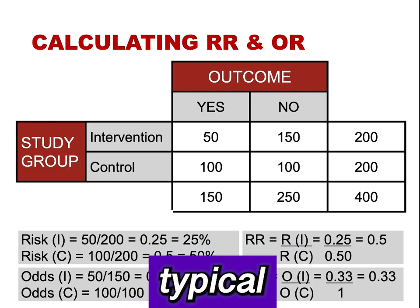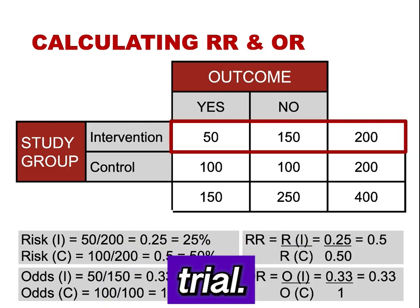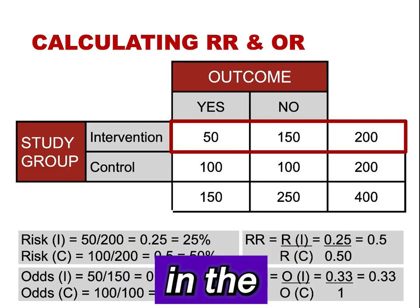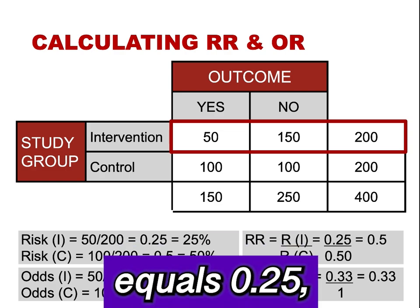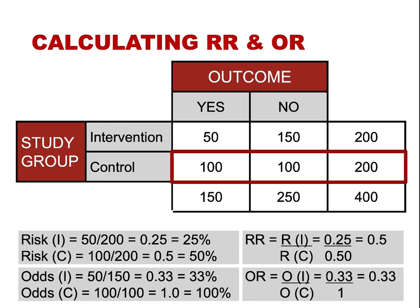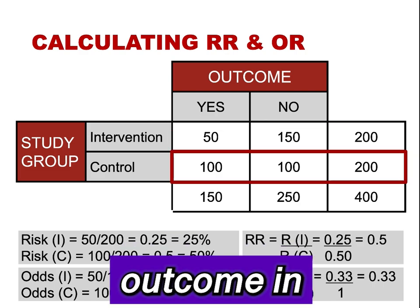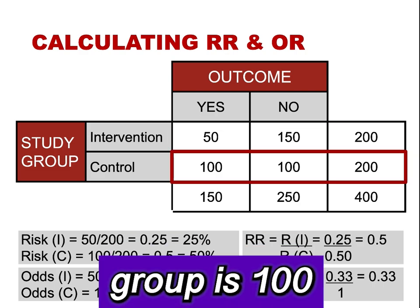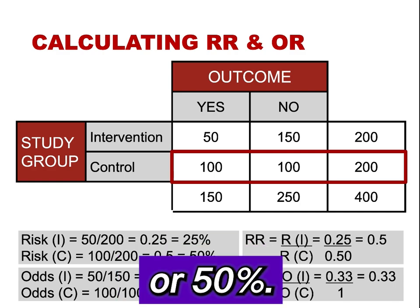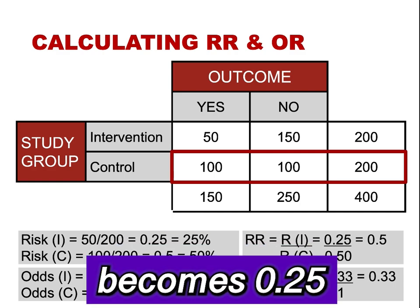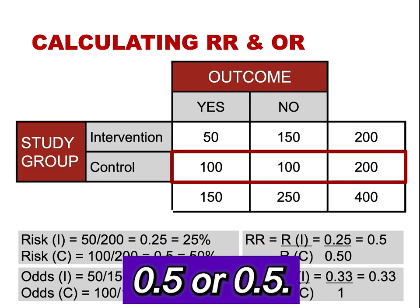Let's look at a 2x2 table for a typical randomized clinical trial. The risk of the outcome in the intervention group is 50 divided by 200, which equals 0.25, or 25%. The risk of the outcome in the control group is 100 divided by 200, which equals 0.5, or 50%. The relative risk becomes 0.25 divided by 0.5, or 0.5.